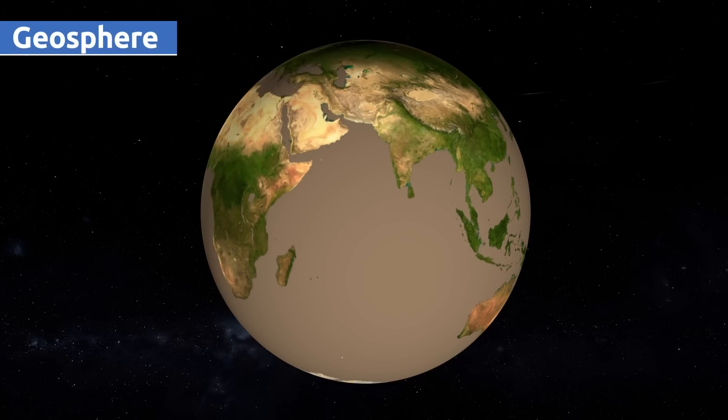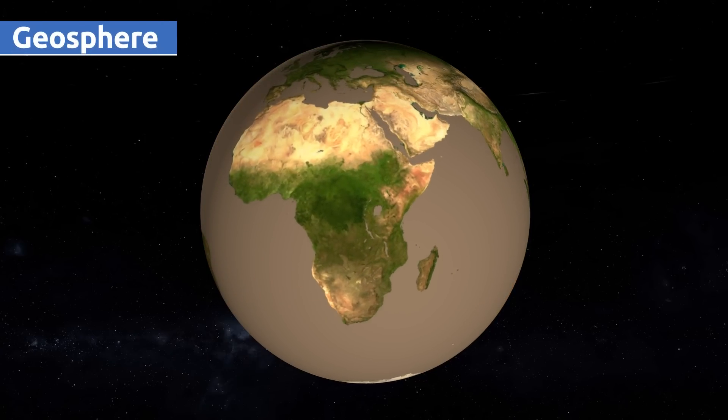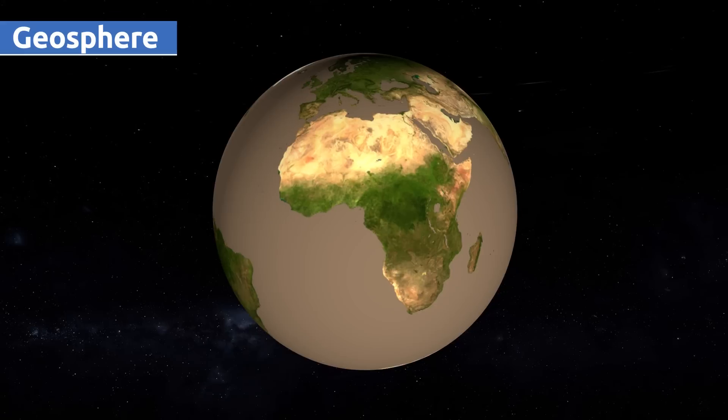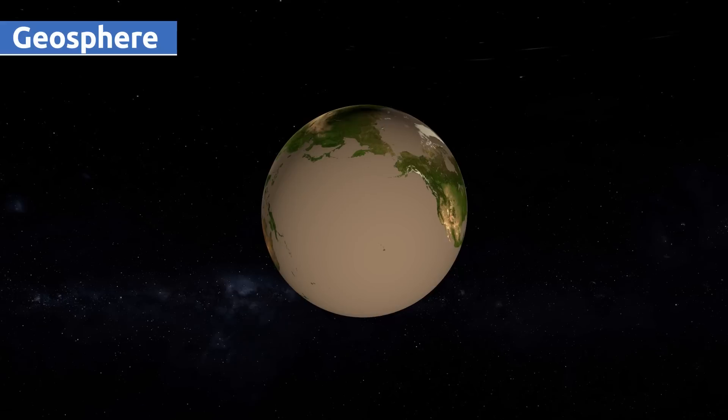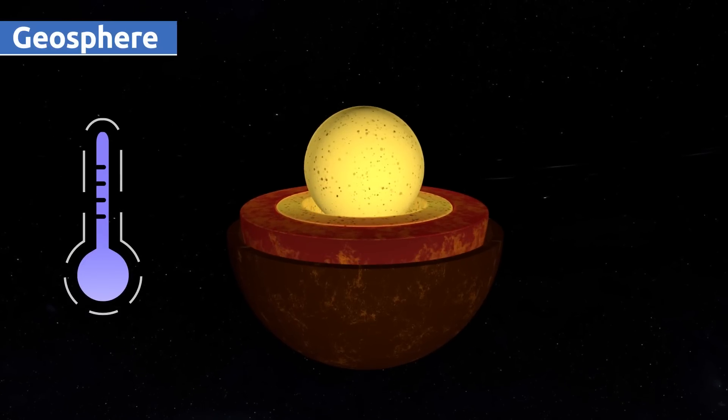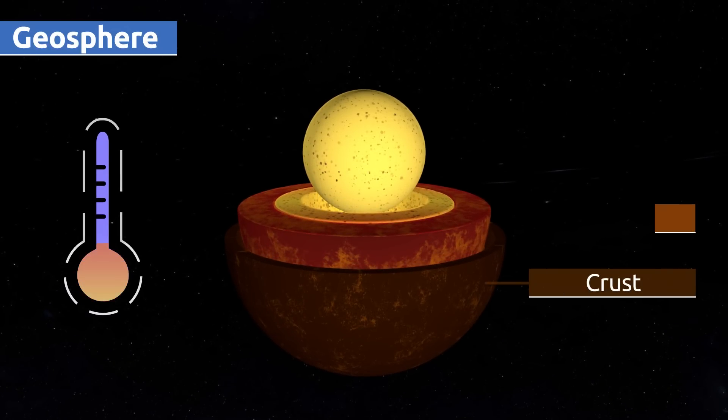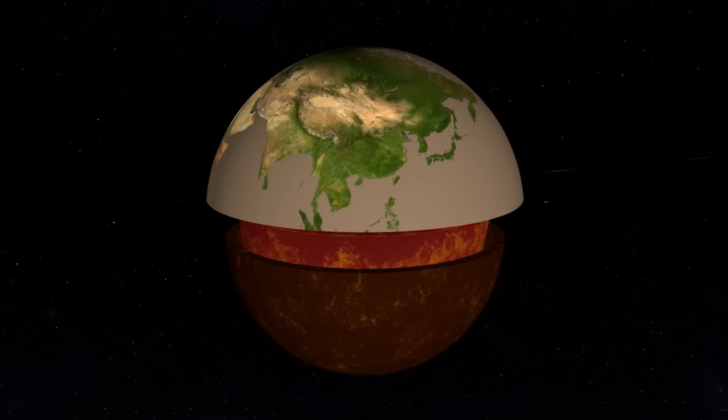The inner layer of the Earth is the geosphere, that extends from the surface to the center of the Earth. This solid ground habitable layer is made up of rocks, minerals, sand, and other materials. The geosphere is divided into three different layers: the crust, the mantle, and the core. Temperature rises significantly as we move deeper.